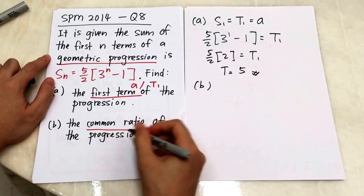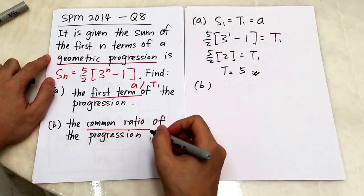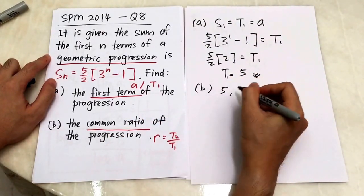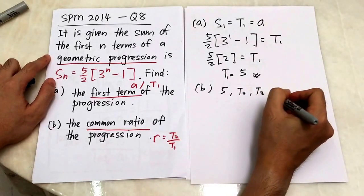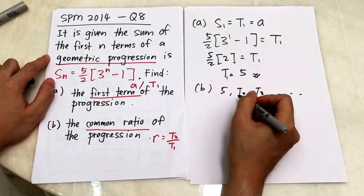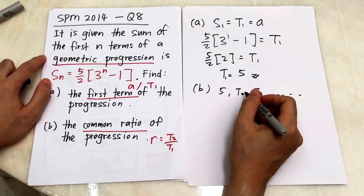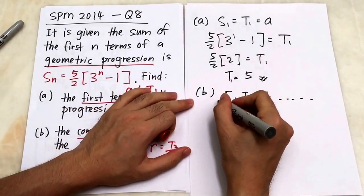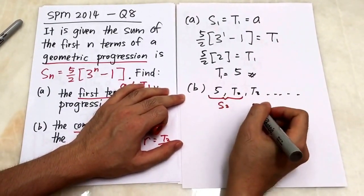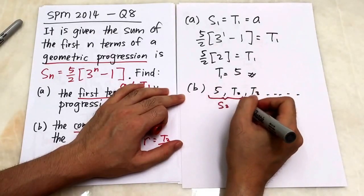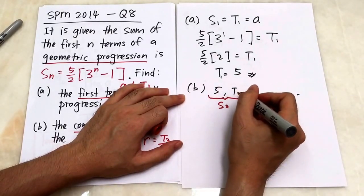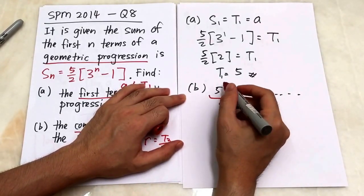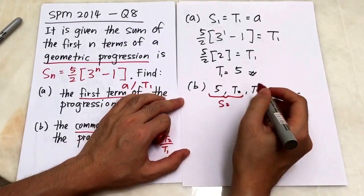For part B, the question asks you to find the common ratio. I know the first term is five, but I need the second term. To find the second term, I compute S2 — the sum of the first two terms — and then subtract the first term. So T2 = S2 minus T1.